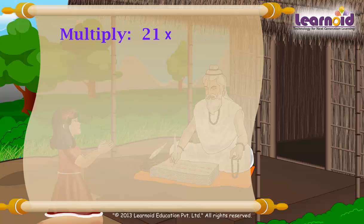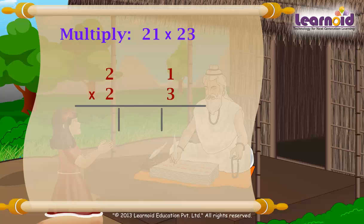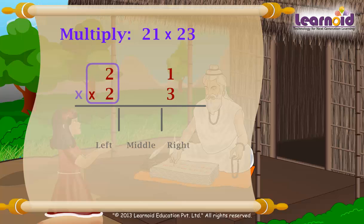21 into 23. We will draw lines to make 3 parts of the answer: left, middle, and right. Starting from the left, multiply vertically: 2 into 2 equals 4.